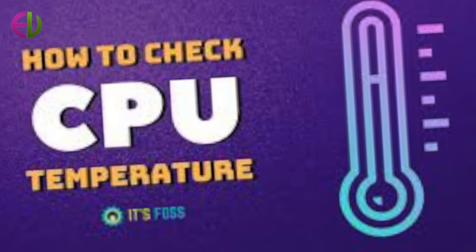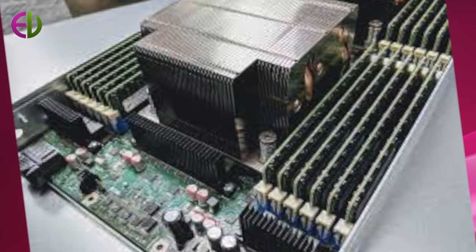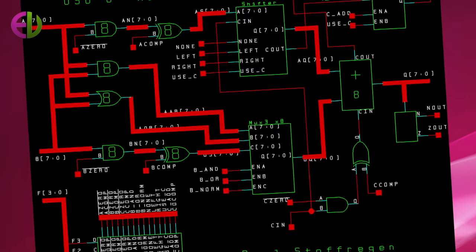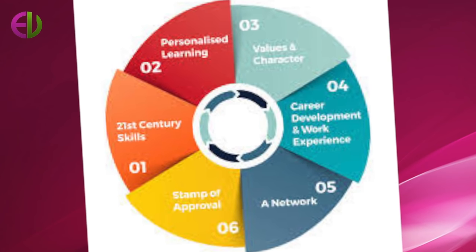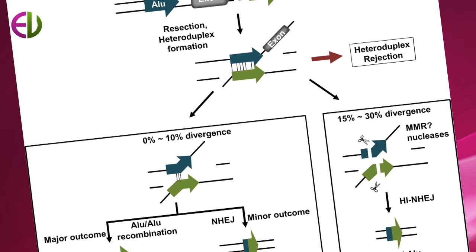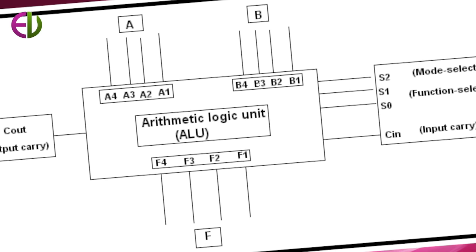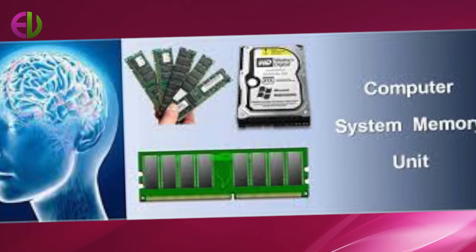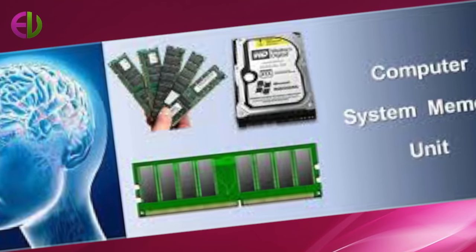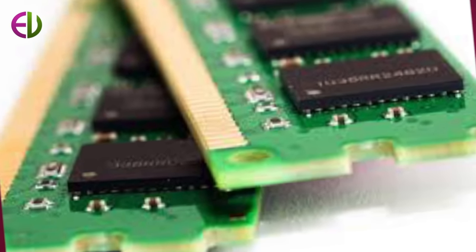Memory, also known as primary storage or main memory, is the part of the microcomputer that holds data for processing — including instructions, the program, and processed information. Part of the contents of memory is held only temporarily; that is, it is stored only as long as the microcomputer is turned on. When you turn the machine off, the contents are lost. The capacity of memory to hold data and program instructions varies in different computers. The original IBM PC could hold approximately 640,000 characters of data or instructions.